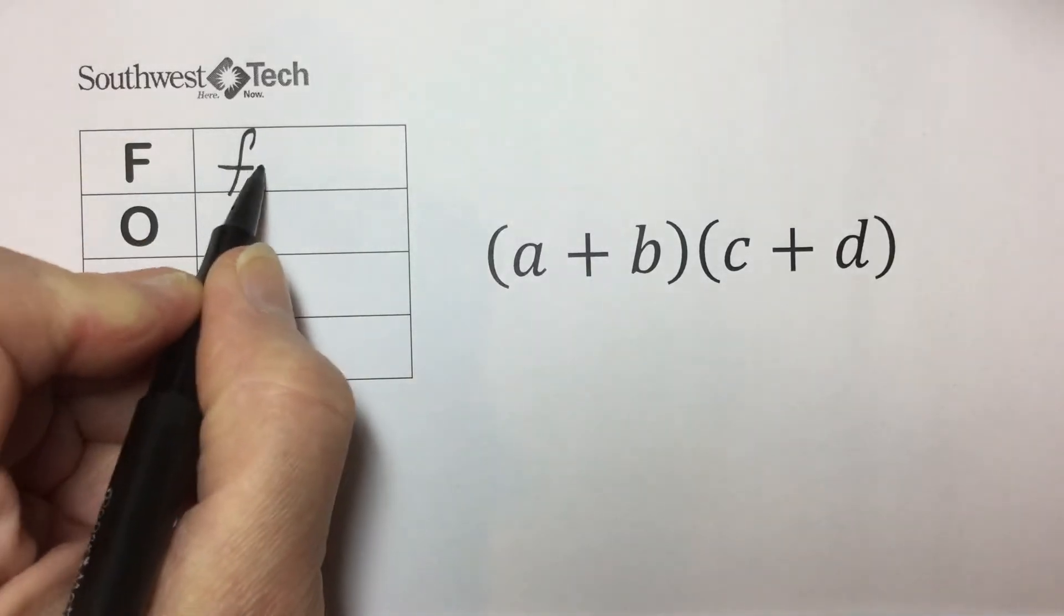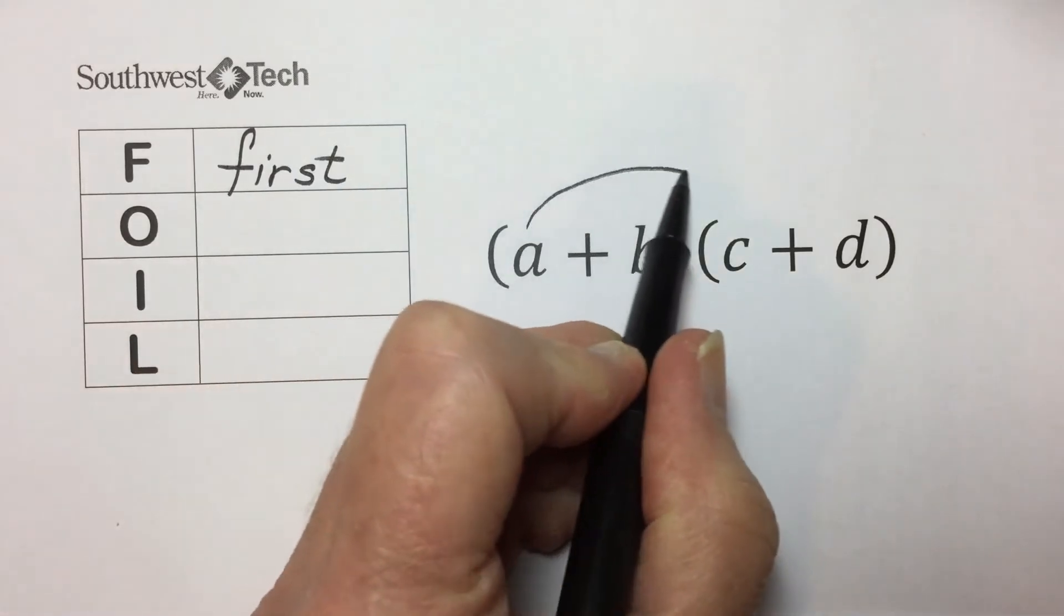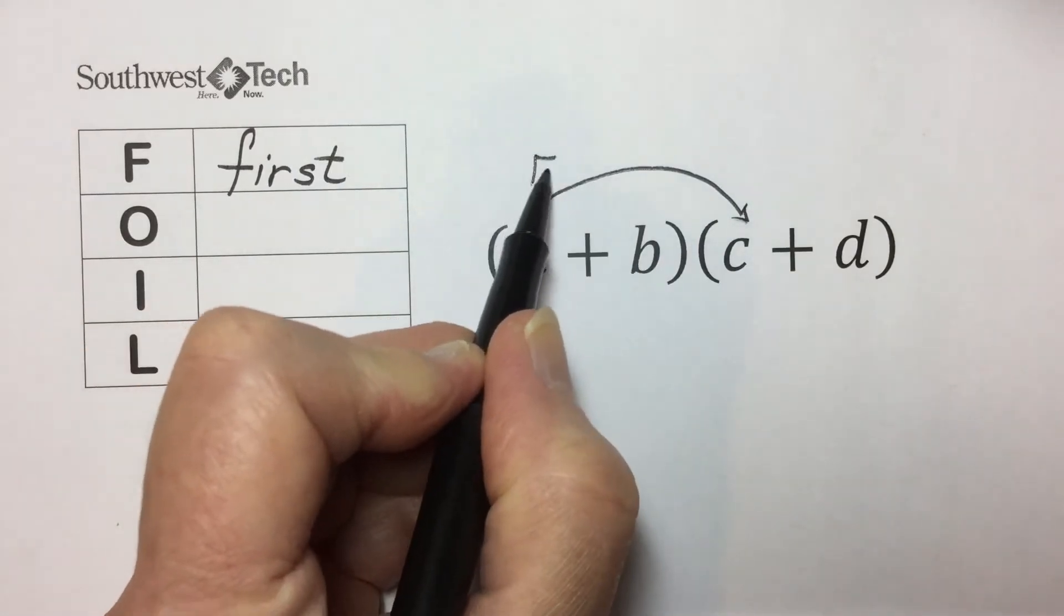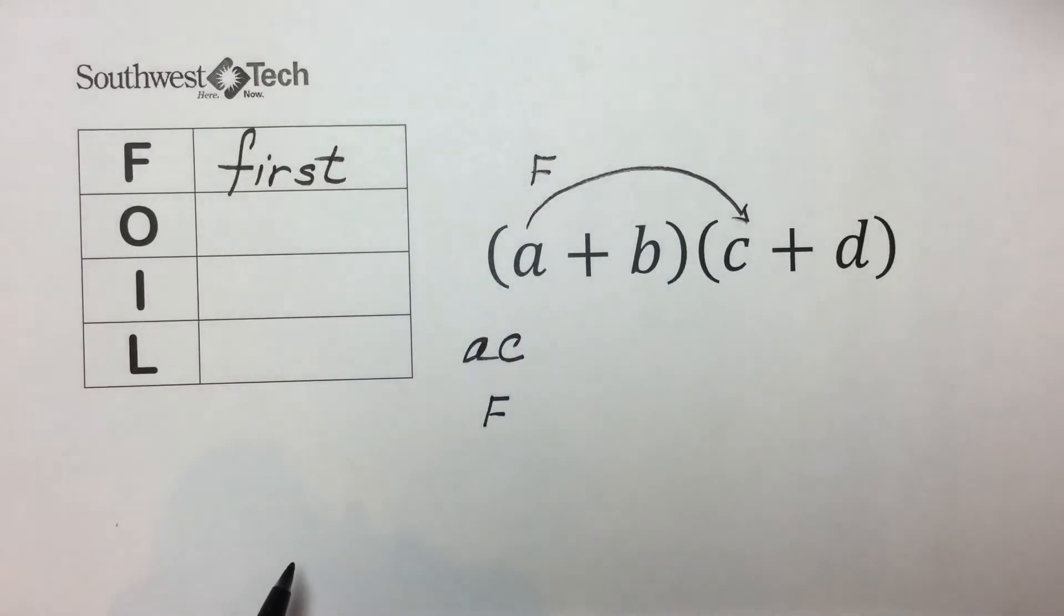F stands for first. The first two terms in the binomial are multiplied together. So in this case, we would end up with AC for the product of the first terms.